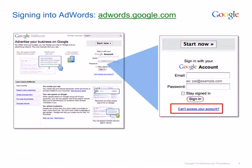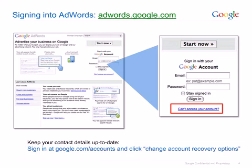We all forget our passwords at some point. Make sure you keep your contact details up to date in your Google account. To view or update your contact details, go to google.com/accounts and click on 'change account recovery options'.